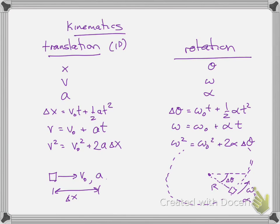We can obviously do three dimensions by just changing x to y and putting subscripts on v and a of x, y, or z. And for rotational, we're just doing one-dimensional rotational kinematics. This refers to a point mass going in a circle at a distance r from some pivot point.